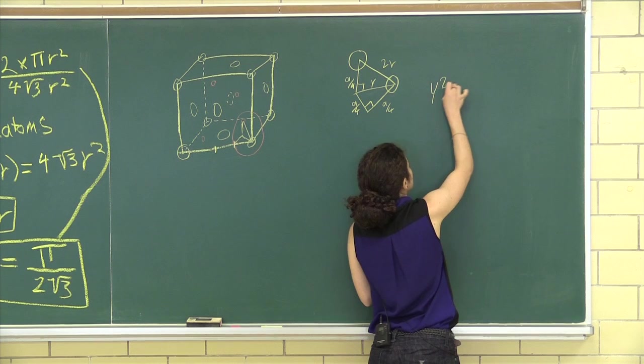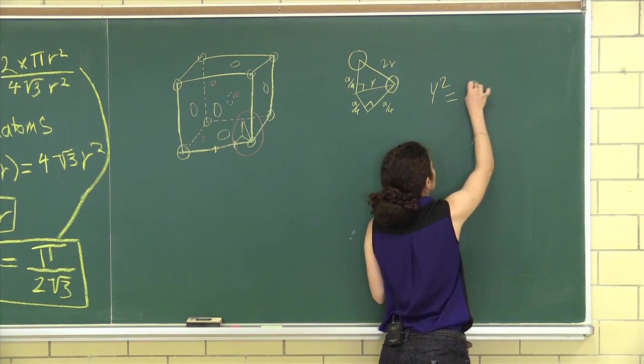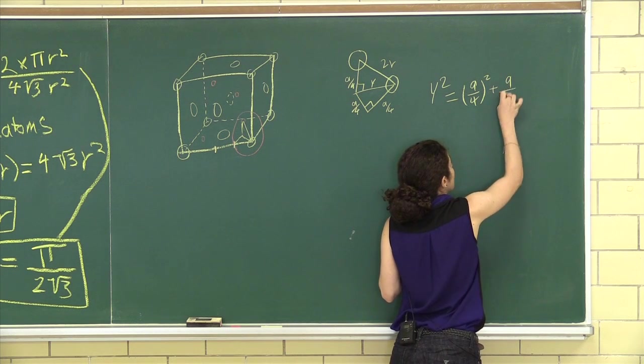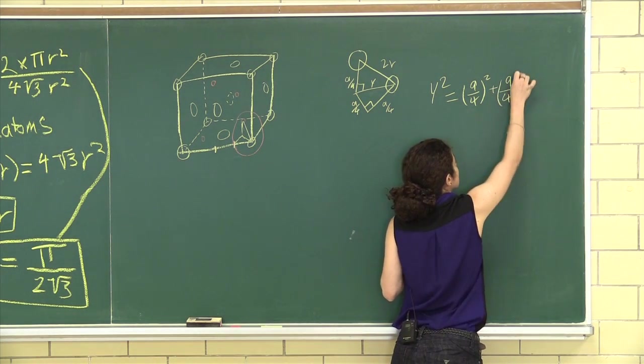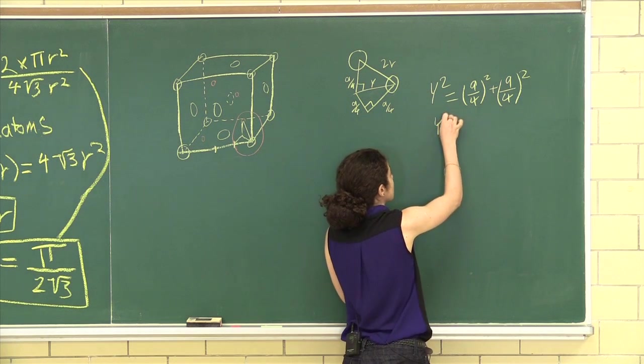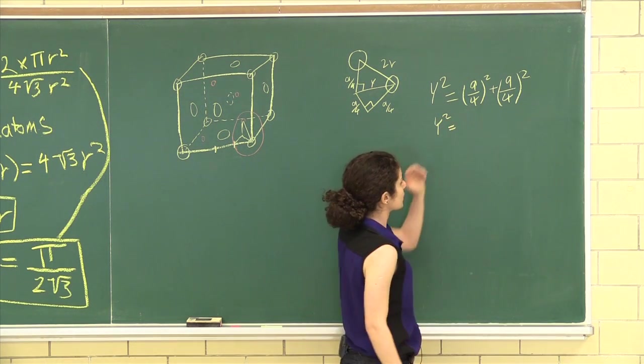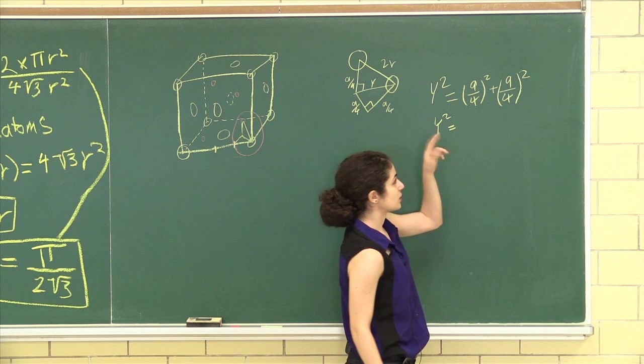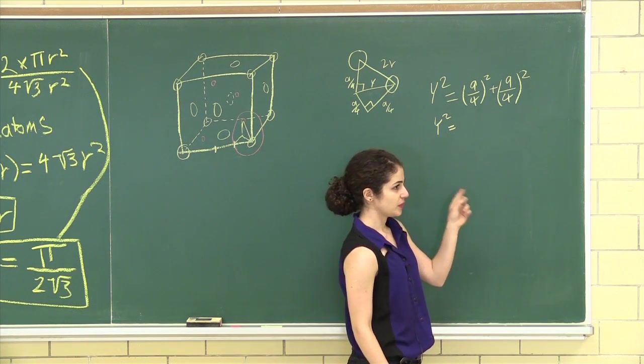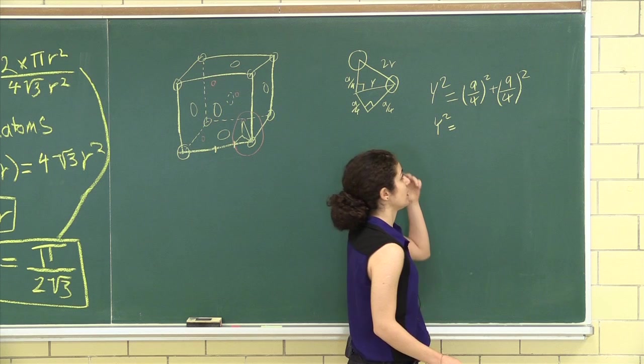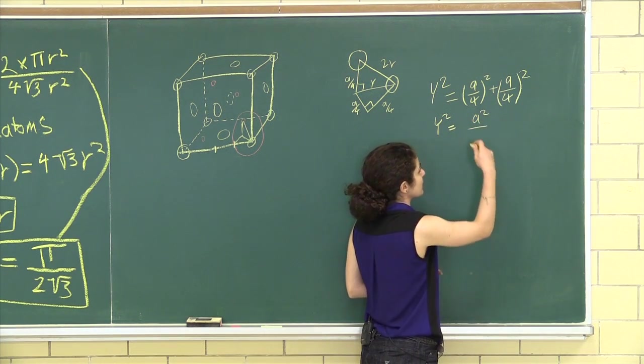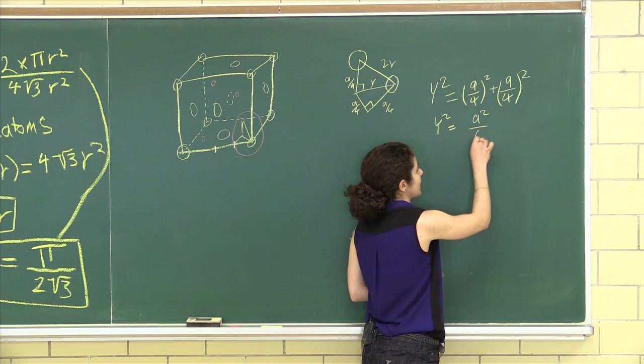y squared is equal to a over 4 squared plus a over 4 squared. That is a squared over 16 plus another a squared over 16. You get a squared over 16, obviously. So a squared over 8.